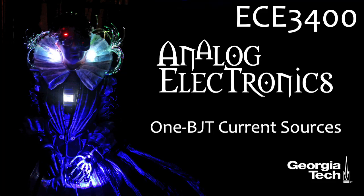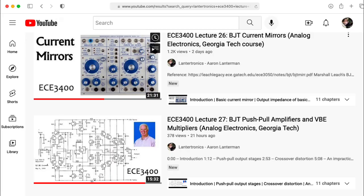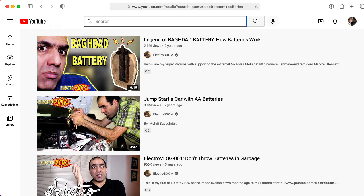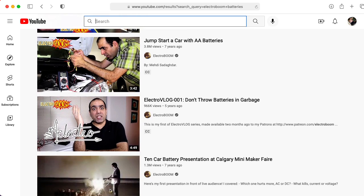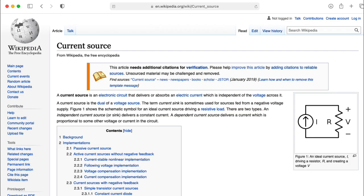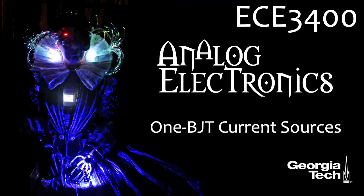Hi there, my name is Aaron Lanterman. I'm a professor of electrical and computer engineering at Georgia Tech. So far in ECE 3400 analog electronics, we've treated current sources as magical things that we could just grab off the shelf. While we have reasonable approximations to voltage sources in the form of batteries and regulated power supplies,